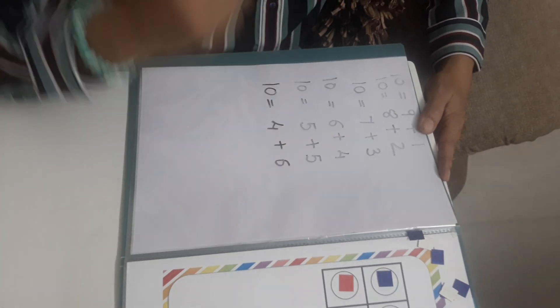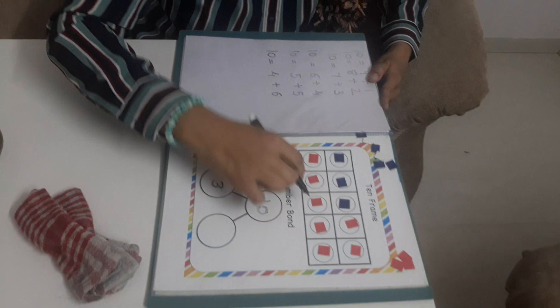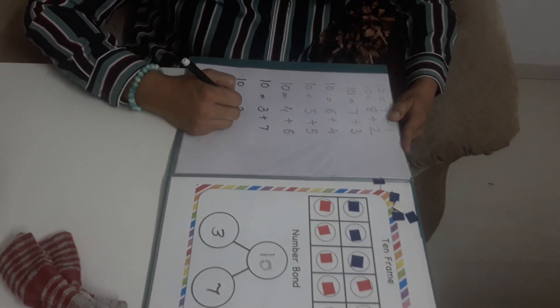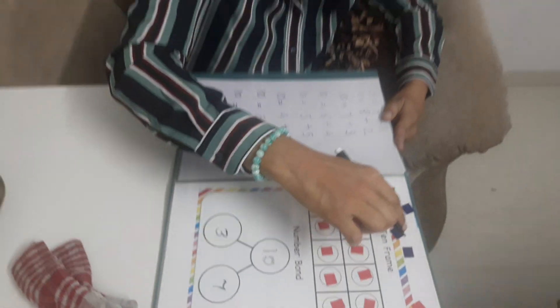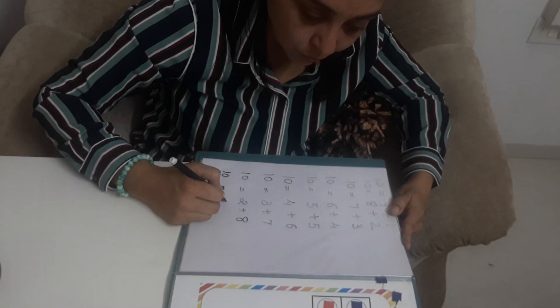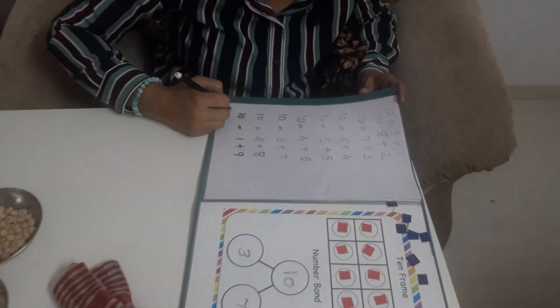Now let's do one more. Let's remove one more and add one more here — that means 3 and 1, 2, 3, 4, 5, 6, 7. So 10 is equal to 3 plus 7. And then 10 is equal to 2 plus 8. And 10 is equal to 1 plus 9. And 10 is equal to 0 plus 10. All reds.